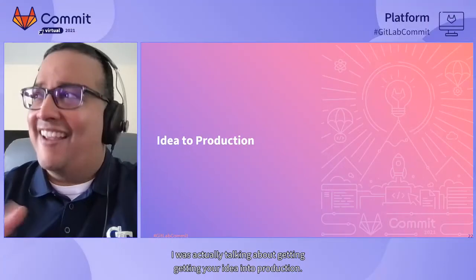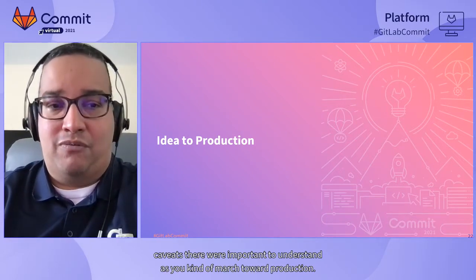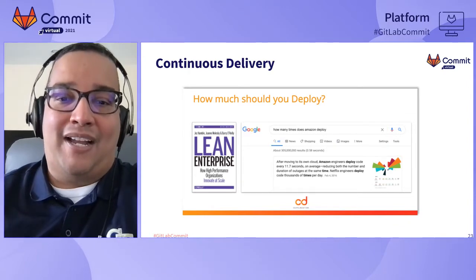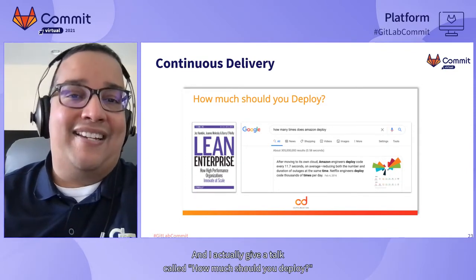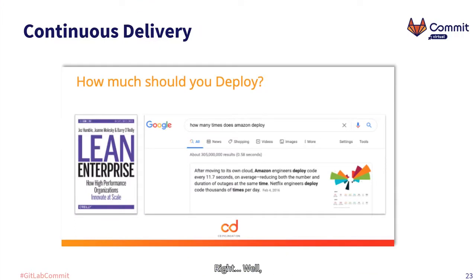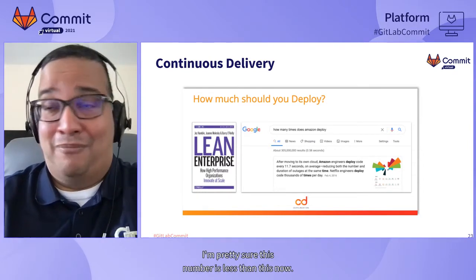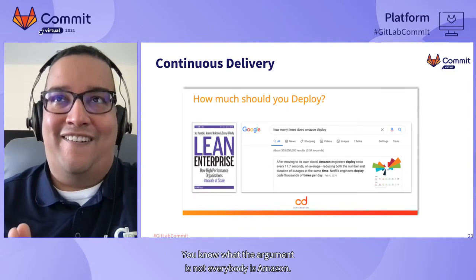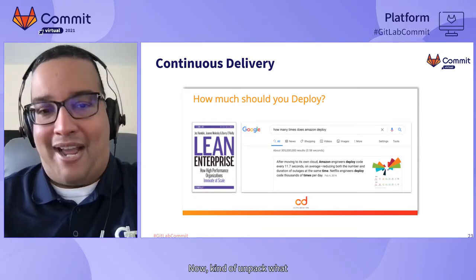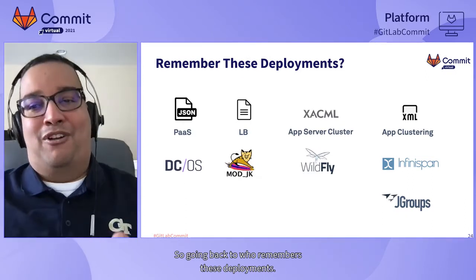Now let's talk about getting your idea into production. This is a talk within a talk — I participate in the Continuous Delivery Foundation and gave a talk called 'How Much Should You Deploy?' If you've read the Lean Enterprise, you know Amazon deploys every 11 seconds — that number is probably even lower now. But not everybody is Amazon. Let's unpack what your deployments used to look like before Kubernetes.